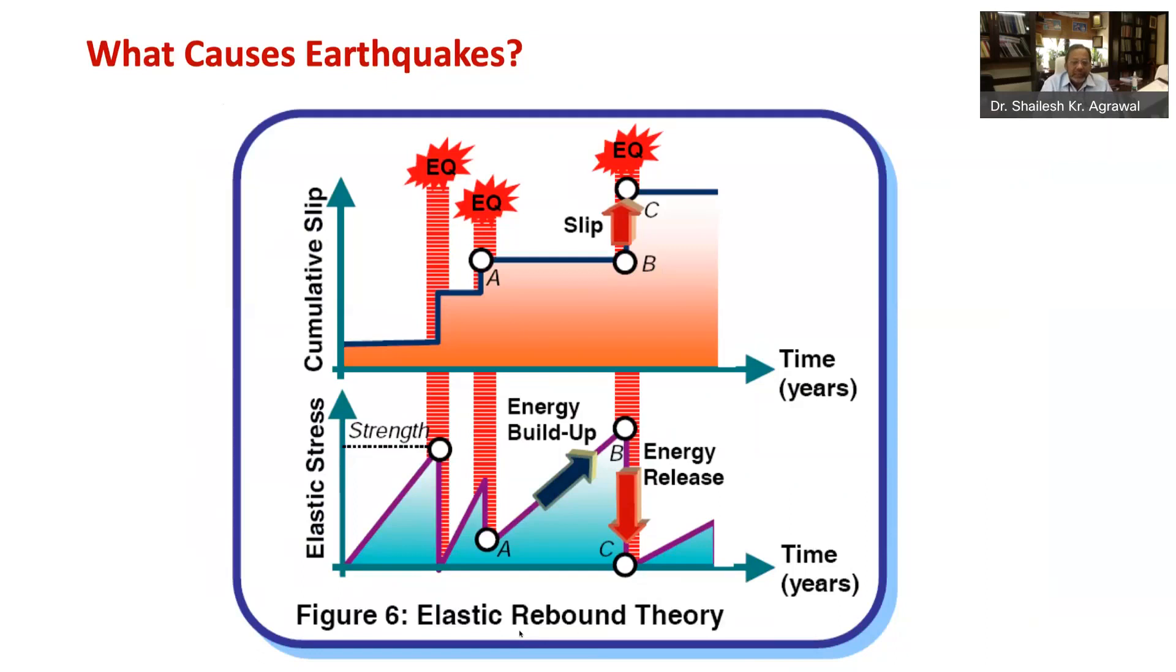Do you know these faults often run into tens of kilometers and constitute an oblong 3D volume? Imagine sudden slip of such voluminous rock. The energy released during 2001 Bhuj earthquake was about 400 times the energy released by the 1945 atom bomb dropped on Hiroshima. This was all about what causes earthquakes.